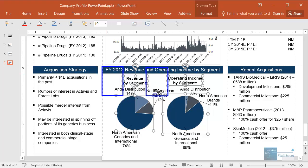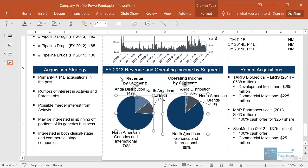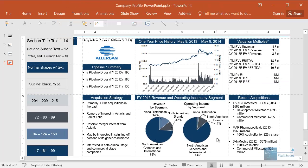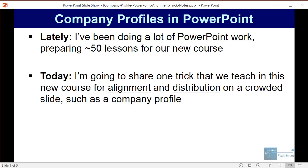There's the same amount of space between the two labels and this side of the shape, and then the two pie charts are also center aligned with the text labels right above them. Ordinarily this would be very difficult to accomplish in PowerPoint, but I'm going to show you a trick and some commands you can use to get this working. I've been doing a lot of PowerPoint work because we're working on a new version of our course, and I wanted to share one alignment and distribution trick that is very useful on a crowded slide such as this company profile.